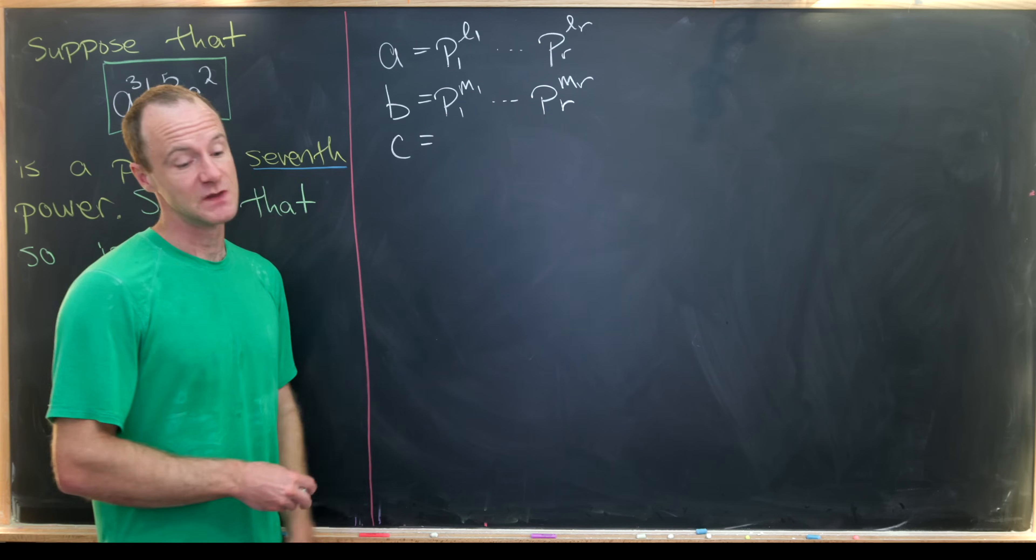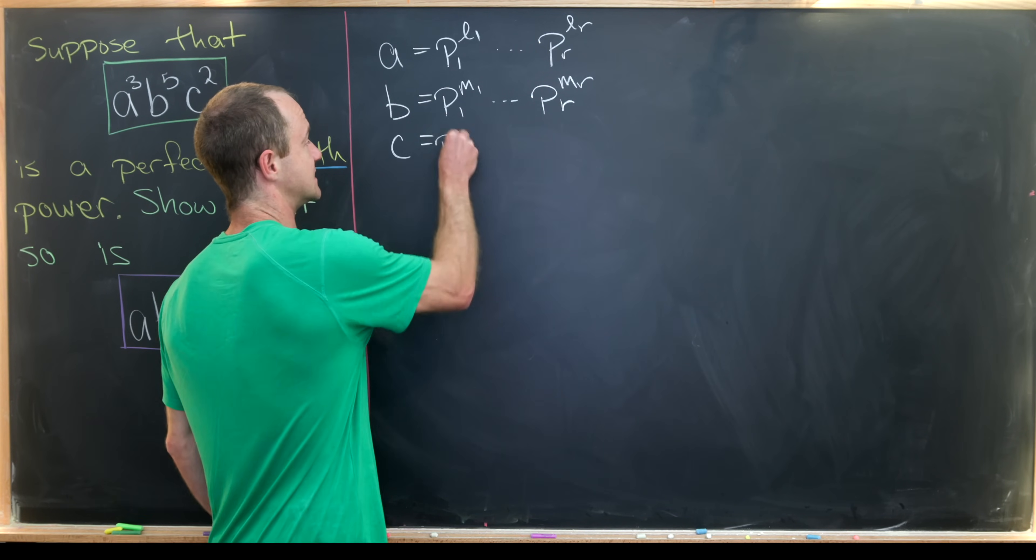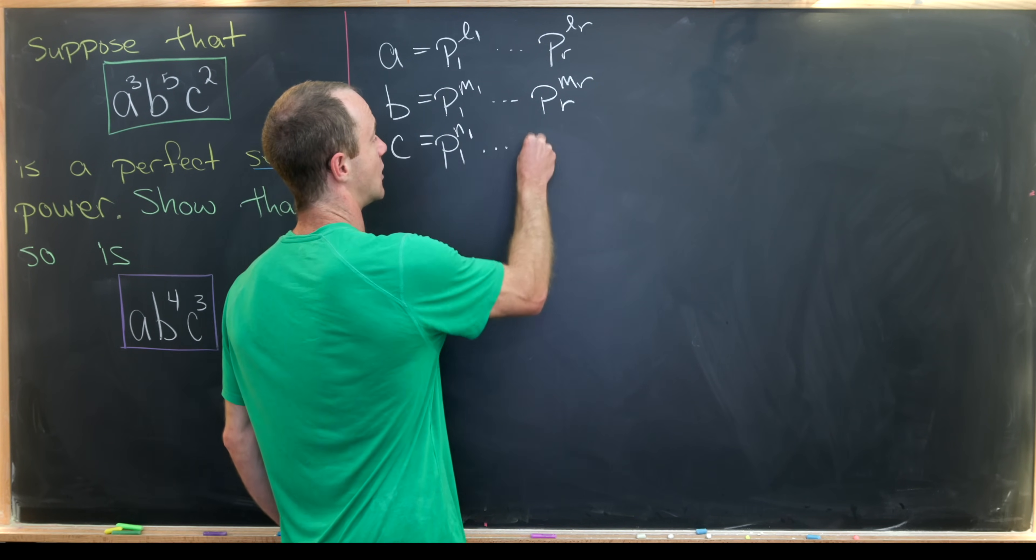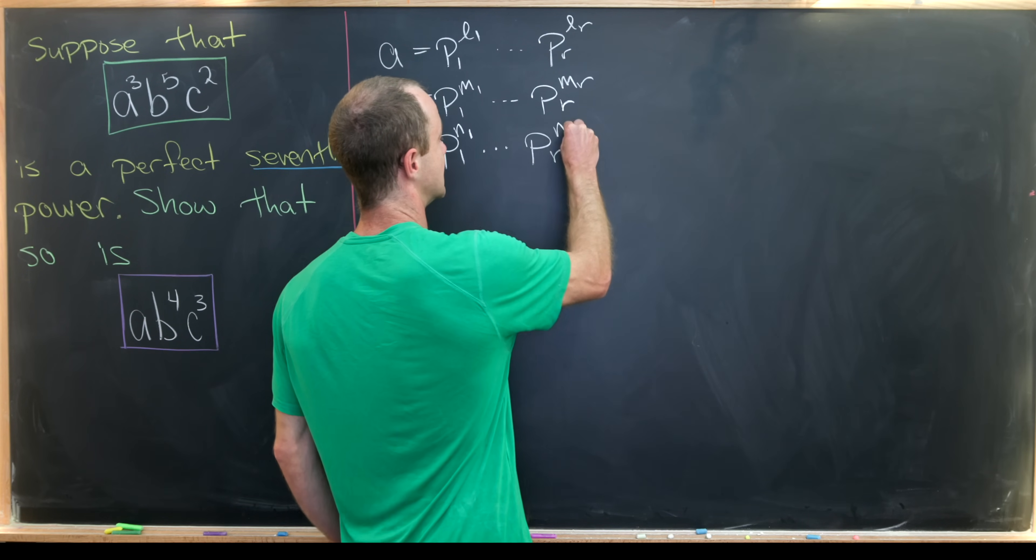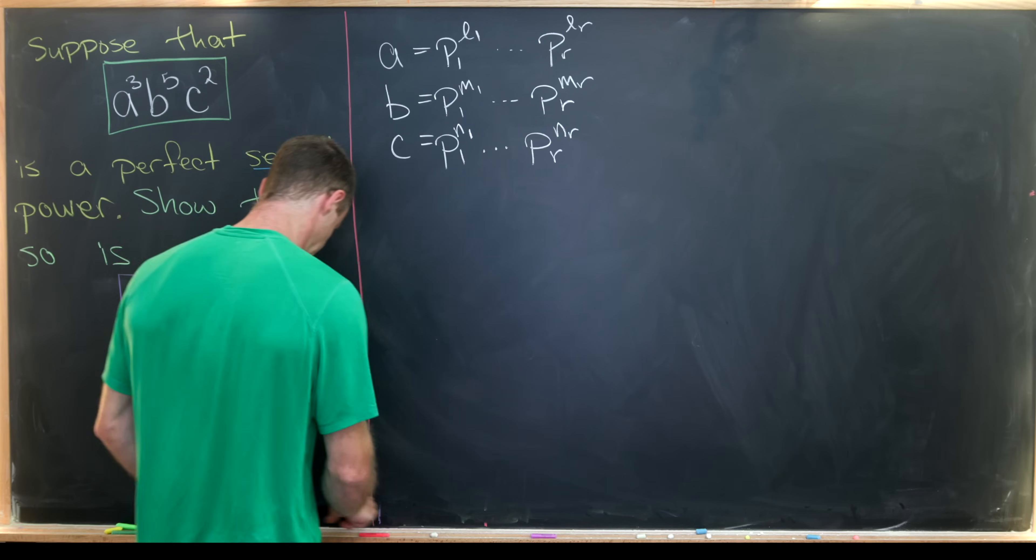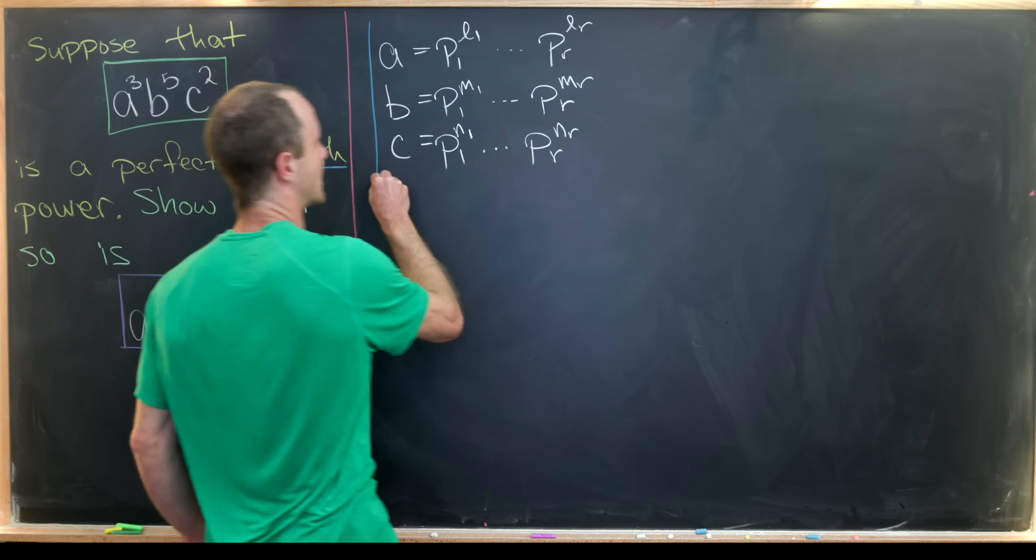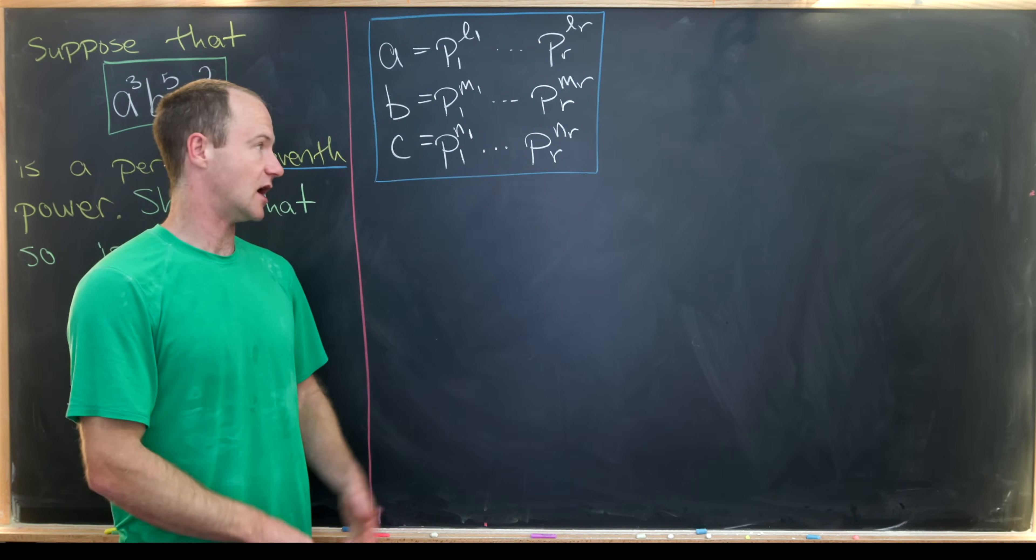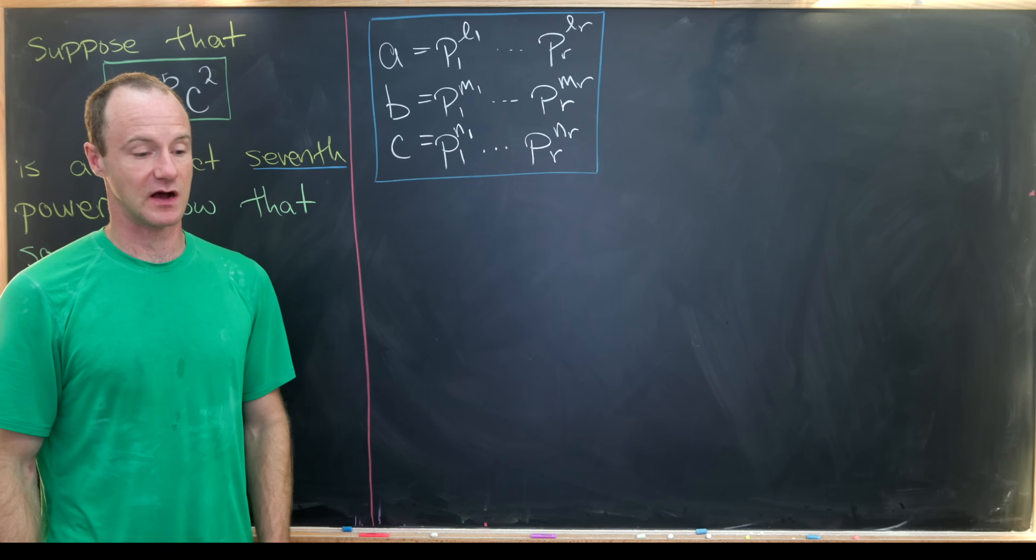Okay, so as such, we'll write c as p1 to the n1 multiplied all the way up to pr to the nr. Okay, good. So that's our way of writing a, b, and c as expansions of all of these kind of same prime powers.